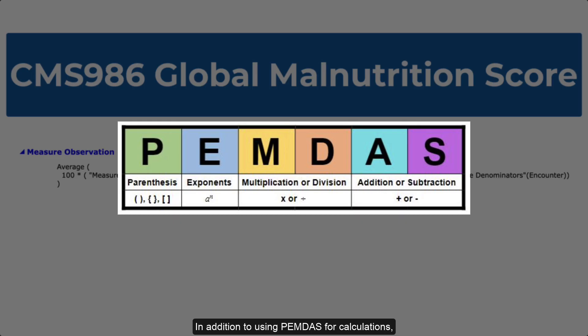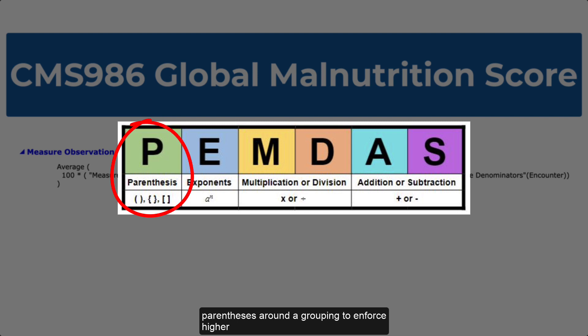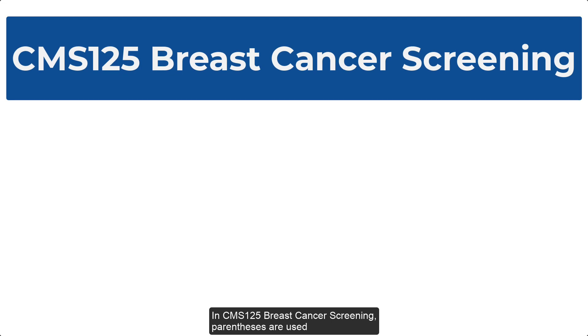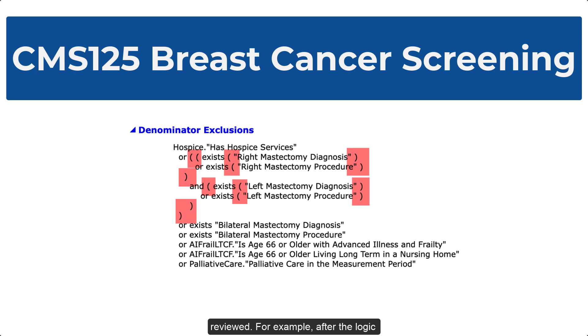In addition to using PEMDAS for calculations, measures can ensure consistent and predictable behavior in the order of operations within CQL expressions by using parentheses around a grouping to enforce higher precedence. In CMS 125 breast cancer screening, parentheses are used to promote operator precedence when looking for mastectomy diagnoses and procedures. If we look at the denominator exclusions logic, we can see that parentheses are used to enforce the order in which the logic will be reviewed.